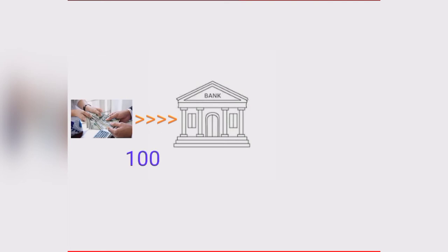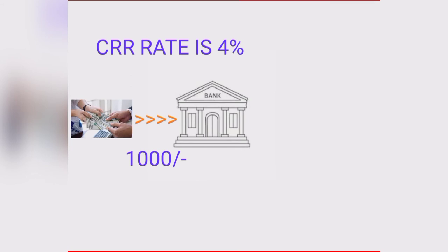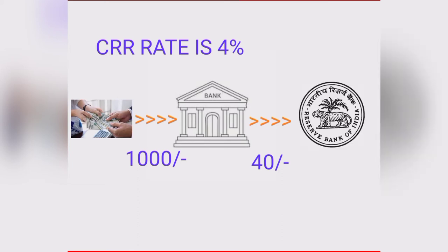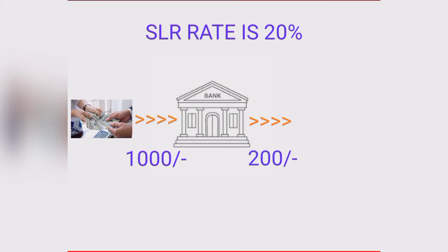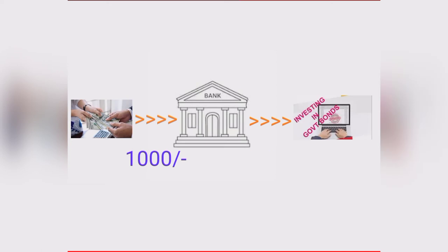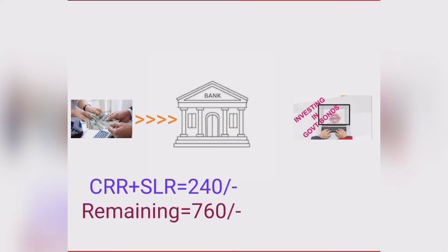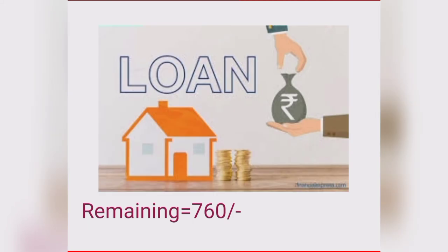Let's understand CRR and SLR with an example. Suppose you deposit ₹1000 in a bank. If CRR is 4%, then 4% of ₹1000 = ₹40, which the bank keeps with RBI. If SLR is 20%, then 20% of ₹1000 = ₹200, which the bank keeps with the government. So total reserved is ₹240, and the bank is left with only ₹760 to use.